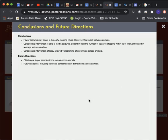We're able to conclude that fewer seizures may occur in the early morning hours, however this varied between animals. Optogenetic intervention is able to inhibit seizures. Optogenetic intervention efficacy showed variable time-of-day effects across animals. To further understand this data, we would like to obtain a larger sample size and proceed with future analyses, including statistical comparisons of distributions across animals.